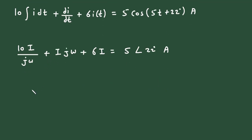Now, here we can take this I common. So, let us take this I common. And this will be 10 divided by j into omega. Now, here we can see this is the value of omega. This 5 is the value of omega. So, plus j into 5 plus 6 is equal to 5 at an angle 22 degree.